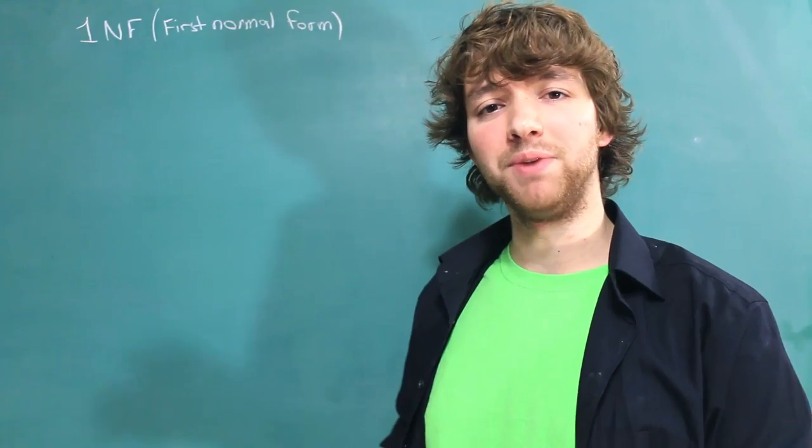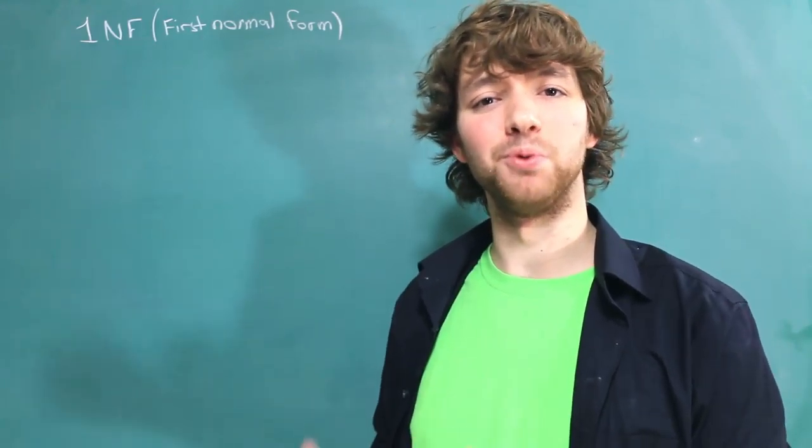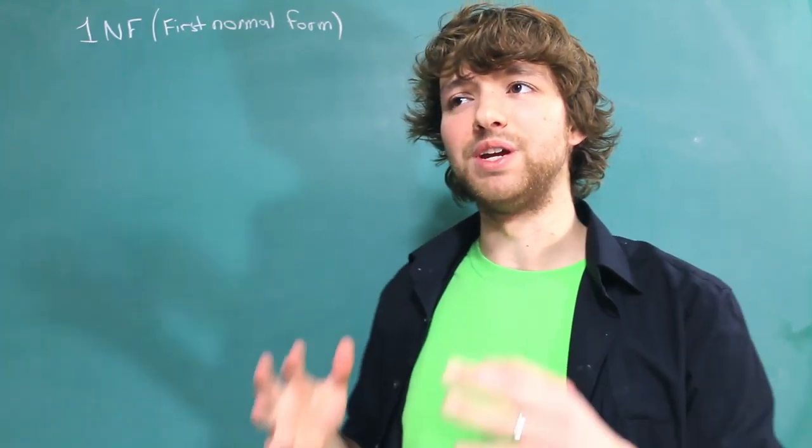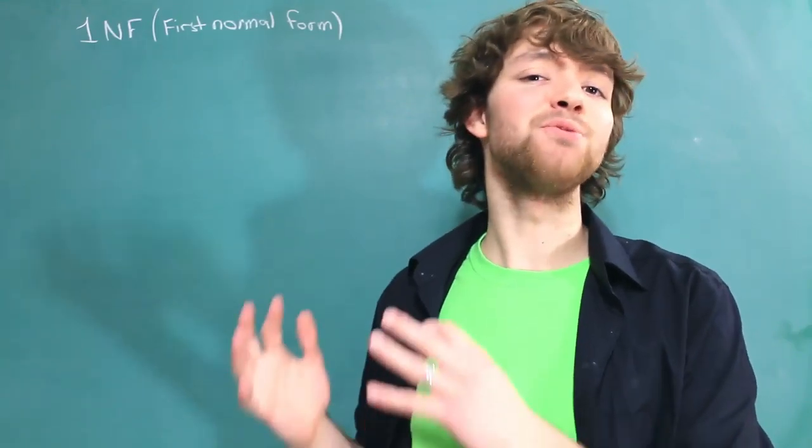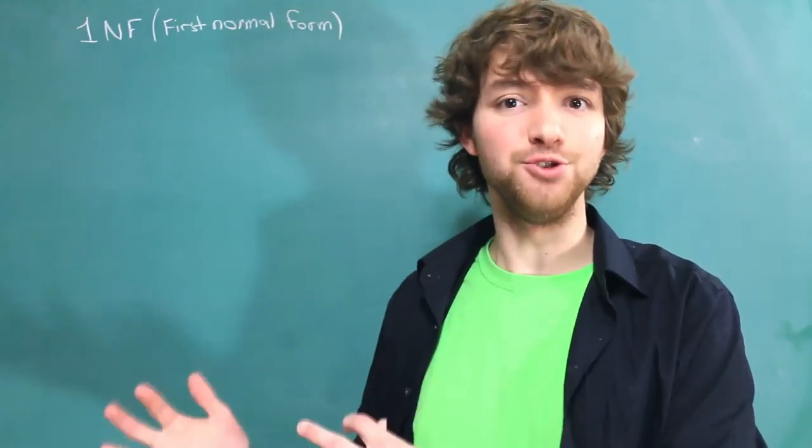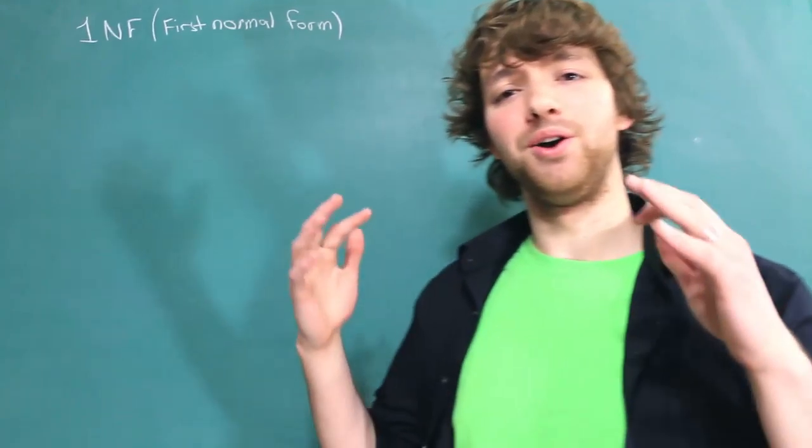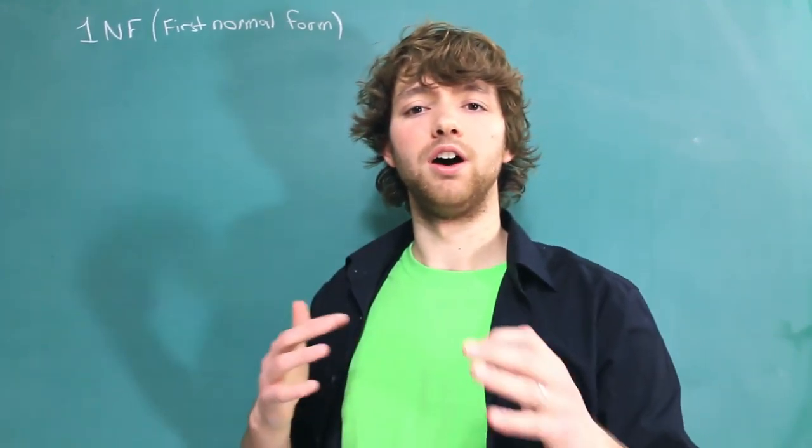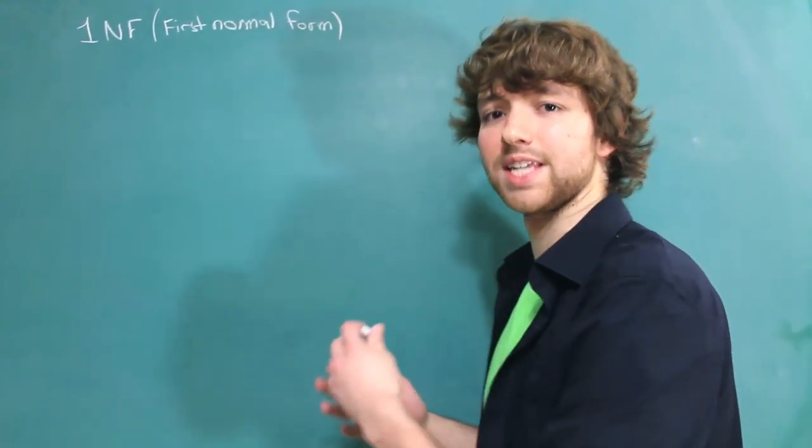Now to put first normal form into very basic, simple English, all we have to do is put our data in tables and don't design the tables like a noob. That's it. So we want to follow the rule of one, also known as atomicity.